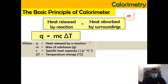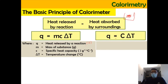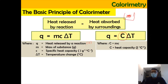Alternatively, you can use Q = CΔT, where capital C refers to mc — that is, the mass of the substance multiplied by the specific heat capacity. Capital C therefore represents the heat capacity, expressed in units of Joule per degree Celsius, because when grams and per gram cancel out, what remains is Joule per degree Celsius.